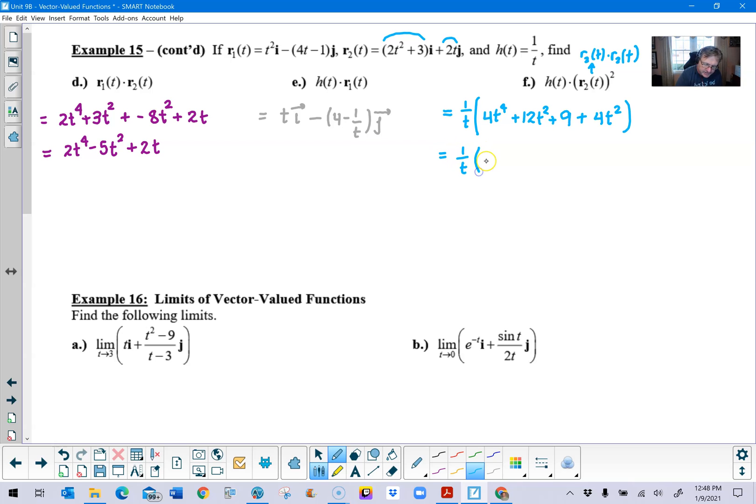And that would be an unsimplified version of my dot product. Well, let's let that 1 over t just sit, relax, wait a little bit, and combine some like terms. And I would have my 4t to the 4th added to 12t squared and 4t squared is 16t squared plus our 9. And now at this point, we distribute through our expression 1 over t and we would get 4t to the 3rd plus 16t plus 9 over t.